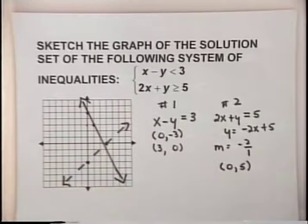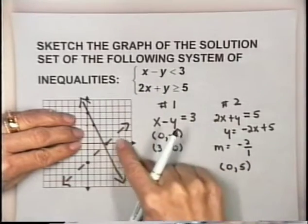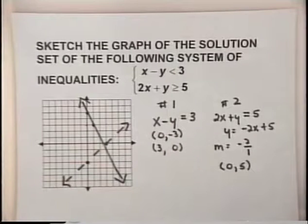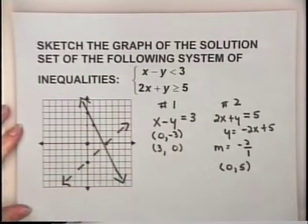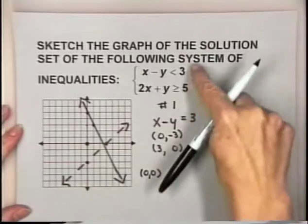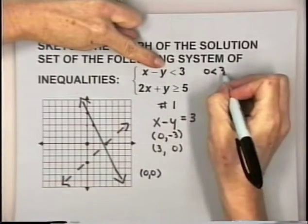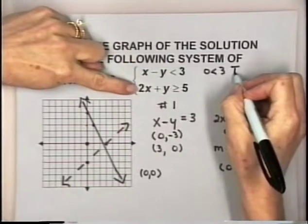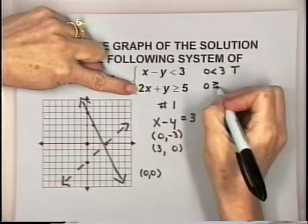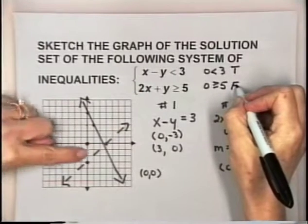Let's use the origin (0, 0) as our test point. Checking in the first inequality: 0 minus 0 is 0, and 0 is less than 3, which is true. Checking in the second inequality: 2 times 0 plus 0 is 0, and 0 is greater than or equal to 5? That is false. So the solutions are not in the region containing the origin.